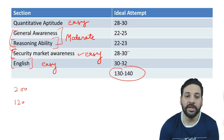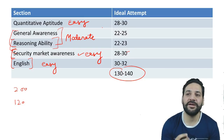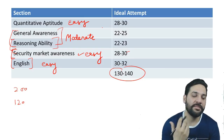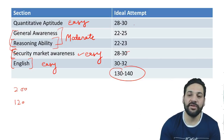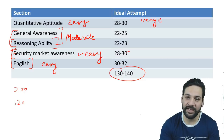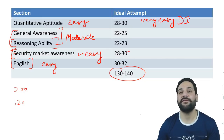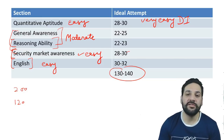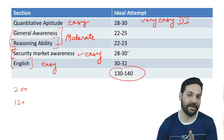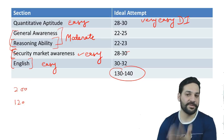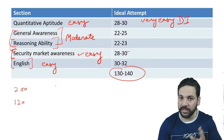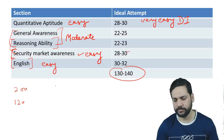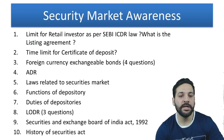In Quantitative Aptitude, there was a trick: the miscellaneous questions were a little difficult, while Data Interpretation was very easy — super easy. If I had used such easy DI questions in my test series, you would have given me one star saying the questions are really easy. But yes, DI was super easy.